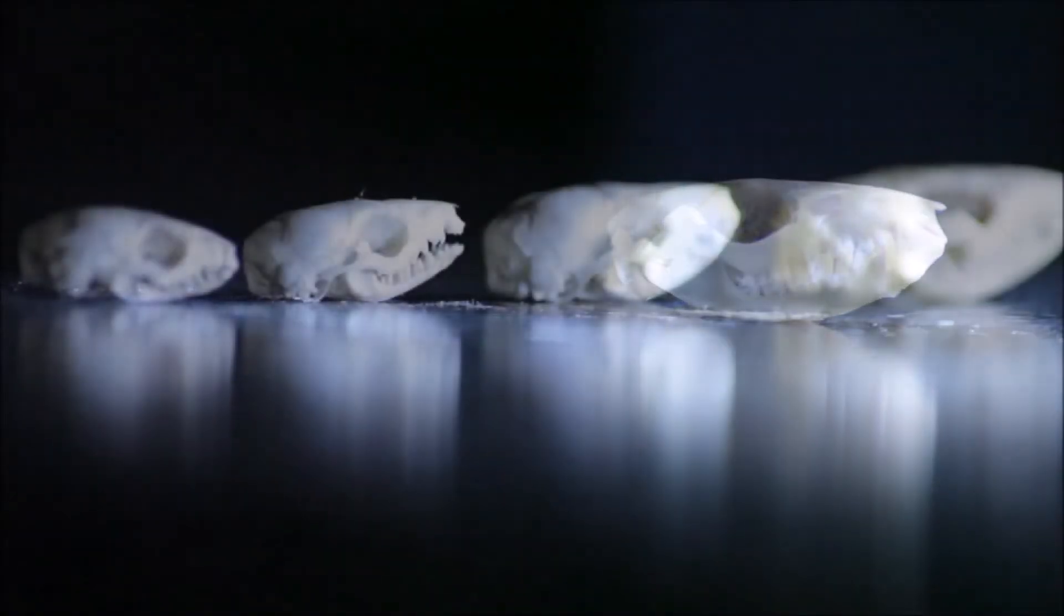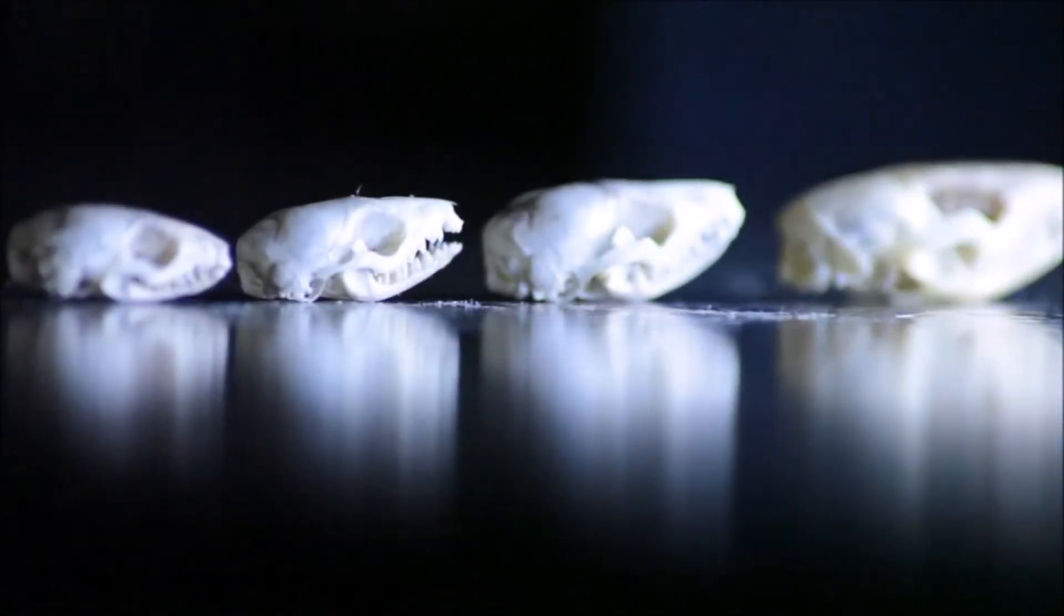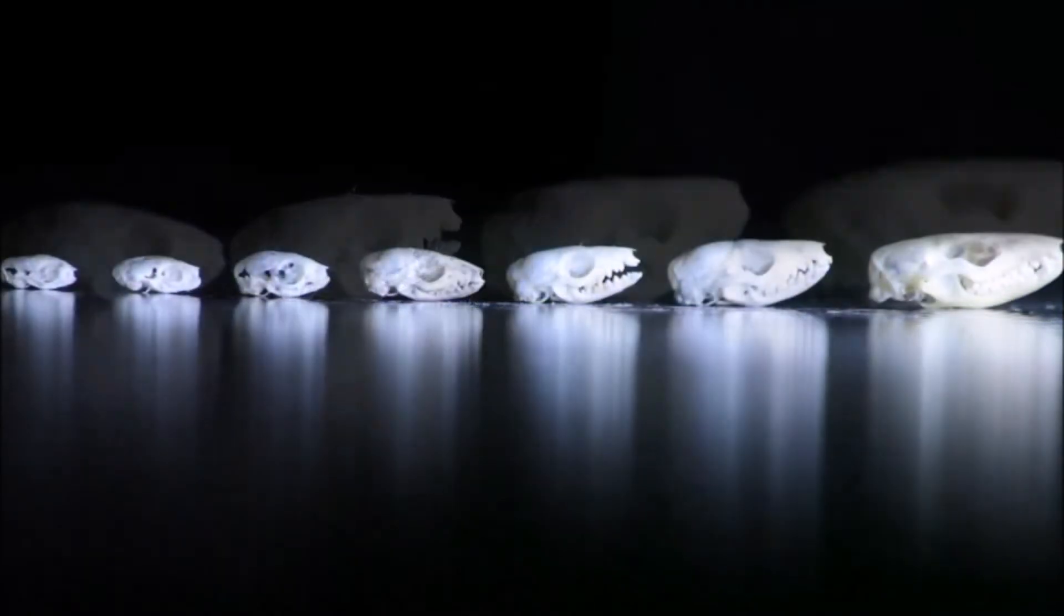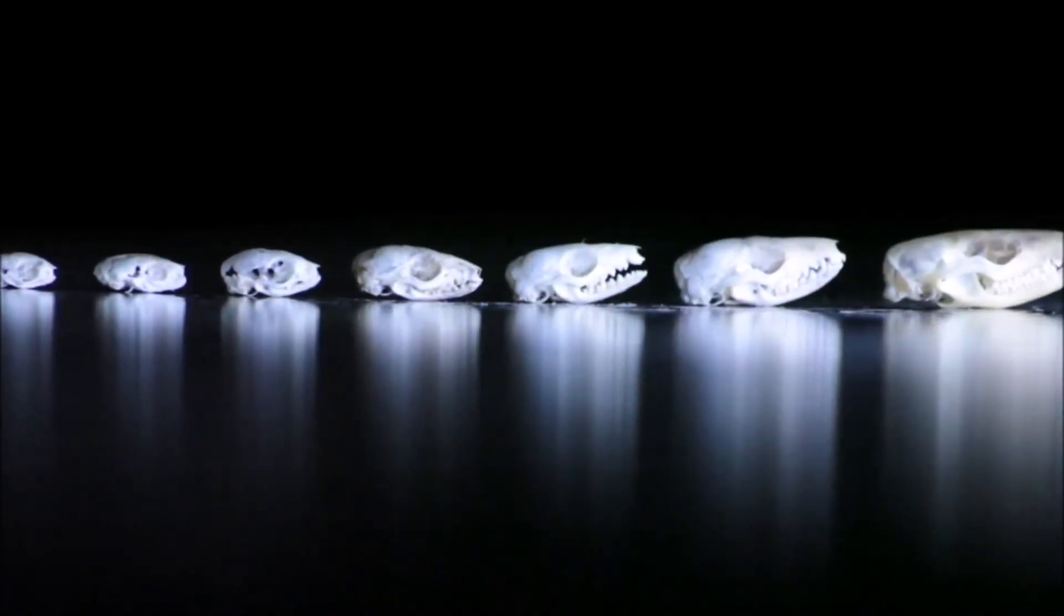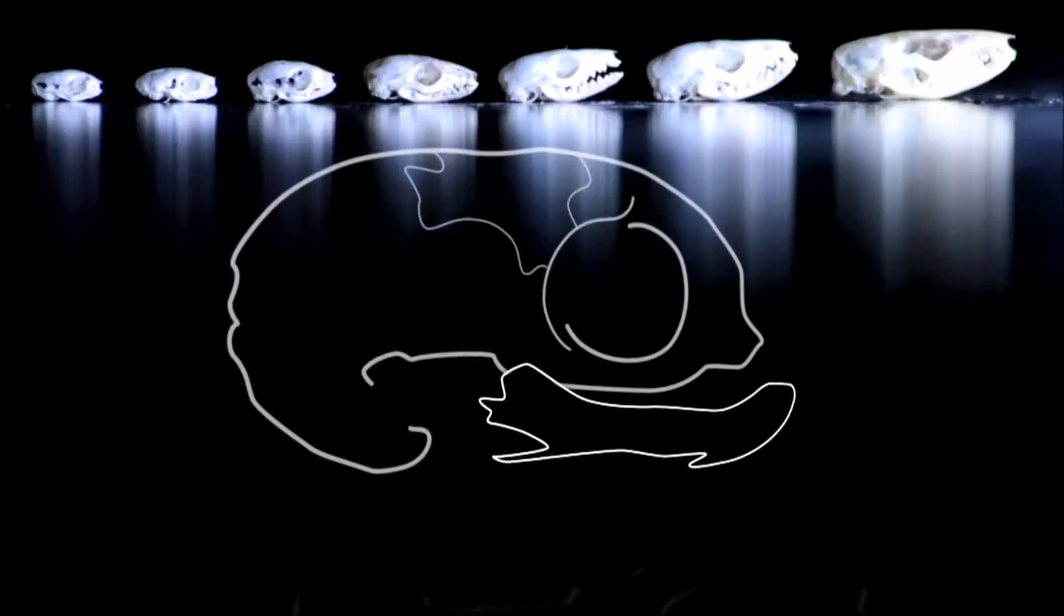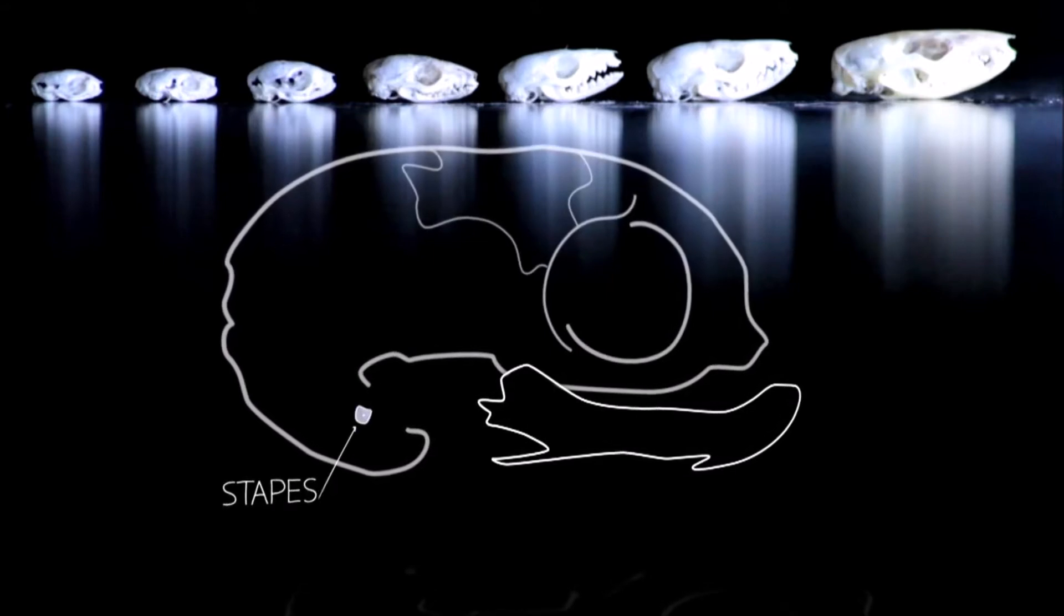By looking at each stage of development, Karen has evidence of how our ear bones evolved. What's really surprising is if you look at these early opossum embryos, what you see is essentially a reptilian-style ear with one ear bone.